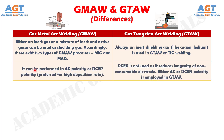Number six: gas metal arc welding can be performed in AC polarity or DCEP polarity, preferred for high deposition rate. Whereas DCEP is not used in gas tungsten arc welding as it reduces the longevity of the non-consumable electrode; either AC or DCEN polarity is employed in gas tungsten arc welding.